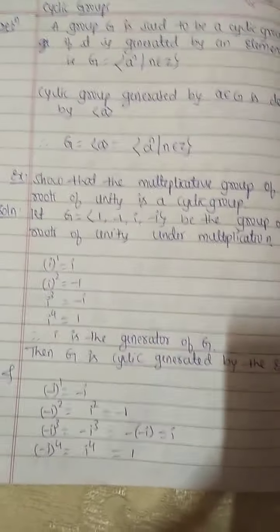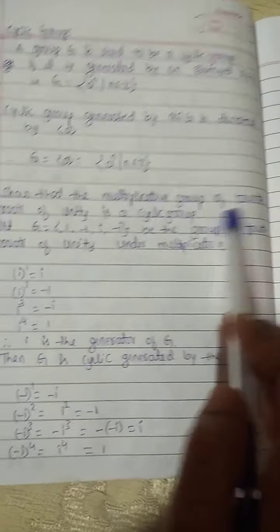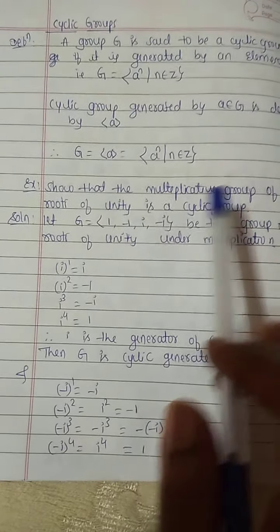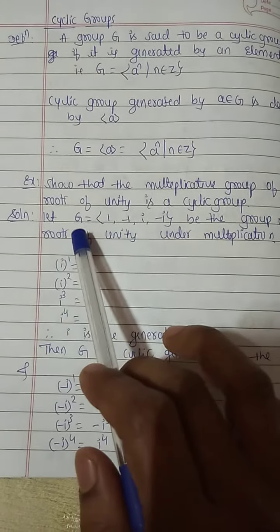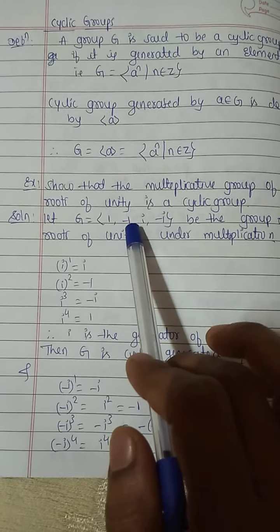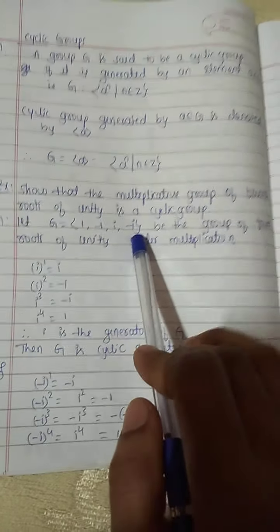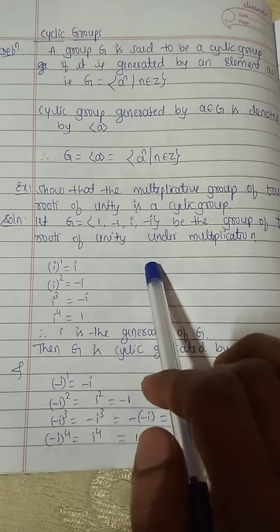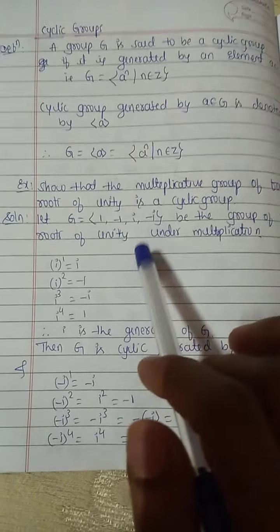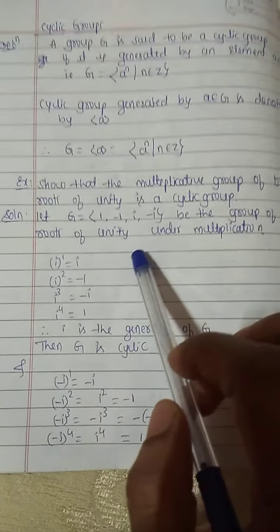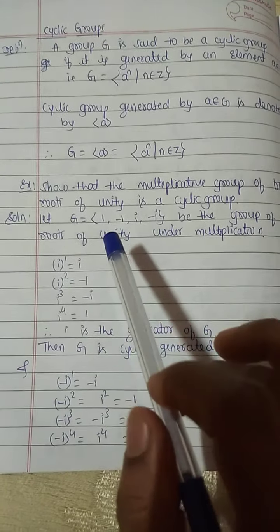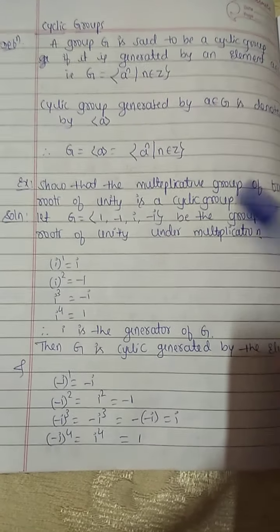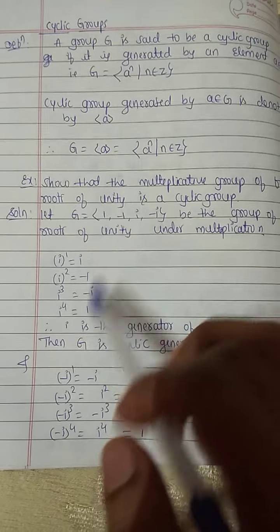Example: Show that the multiplicative group of 4th roots of unity is a cyclic group. We already know that the 4th roots of unity G equals {1, -1, i, -i} is the group of 4th roots of unity under multiplication. Now we have to show that this group is a cyclic group — that G has an element that generates all the elements of the group G.